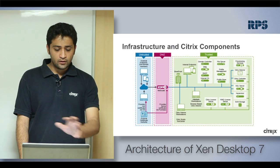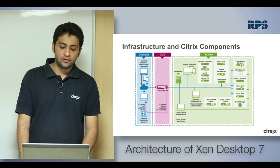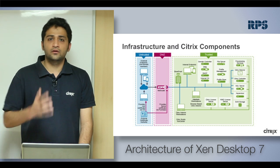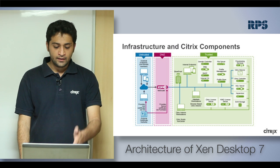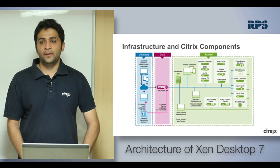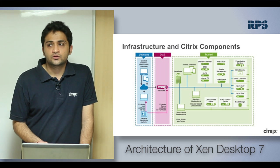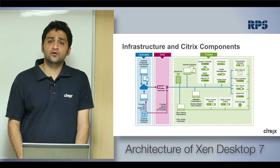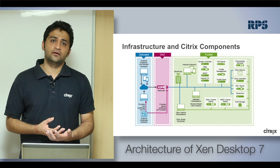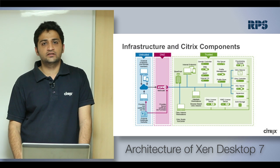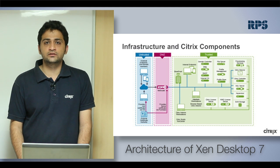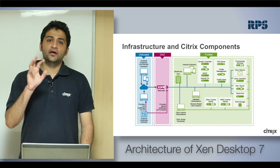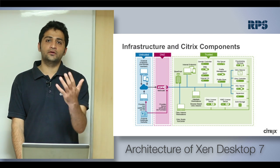Looking at the overall infrastructure: you have external and internal users. Users from inside the company premise or from the internet enter the DMZ — your perimeter network — where NetScalers and Access Gateways sit. Citrix now offers Access Gateway functionality on top of NetScaler, called NetScaler Gateway. NetScaler is primarily used as a load balancer, and users coming in will hit NetScaler, which forwards the request to your StoreFront servers.